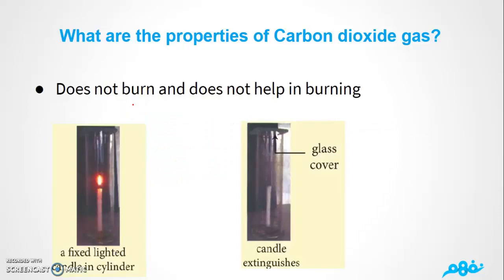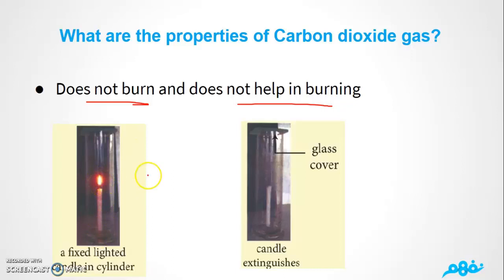Carbon dioxide does not burn and does not help in burning — the opposite of oxygen. As we can see in the experiment with the candle: once we placed carbon dioxide over it or covered it with a glass cover, the candle extinguishes. This confirms that carbon dioxide does not burn and does not support burning.